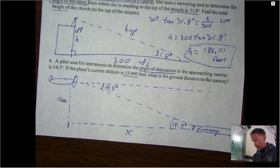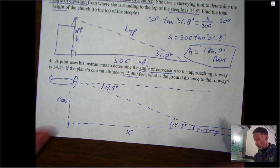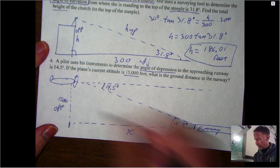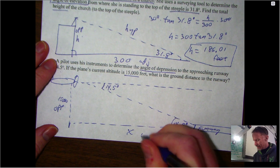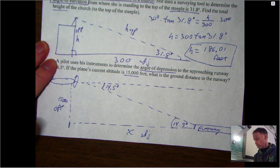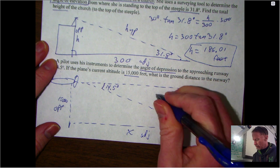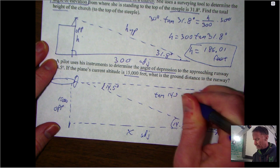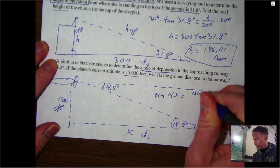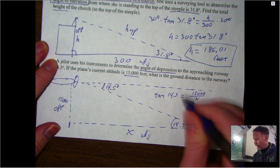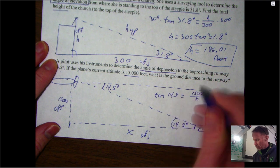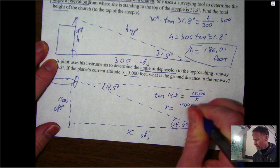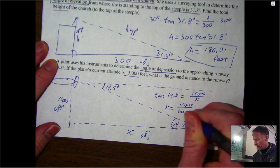But now from here it's the exact same setup. Here's my angle. I know the 15,000 - that's my opposite side - and what I want to find, the x, is the adjacent side. So opposite adjacent, that'll be another tangent question. So tangent of 14.5 is equal to 15,000 over x. This is a division question or switching question, so x equals 15,000 over tangent 14.5.